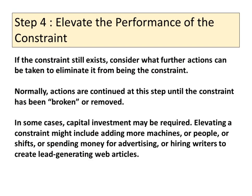Step 4: Elevate the performance of the constraint. If the constraint still exists, consider what further actions can be taken to eliminate it from being the constraint. Normally, actions are continued at this step until the constraint has been broken or removed. In some cases, capital investment may be required. Elevating a constraint might include adding more machines, people, or shifts, or spending money for advertising, or hiring writers to create lead-generating web articles.